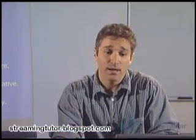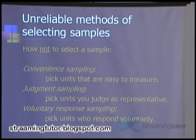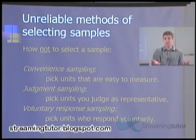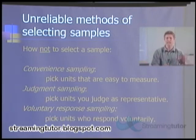Let's talk about how not to pick a sample, because there are lots of ways you can mess up if you don't use random sampling. One approach that's often used — but is not a good approach — is convenience sampling, where you pick the units or people who are most convenient. For example, you might go to the university student center and ask the people who come by. But people who come to the student center may not be representative of the whole student body — they may be more active in university politics. So convenience sampling is a bad idea.